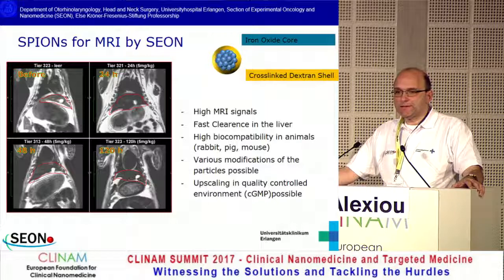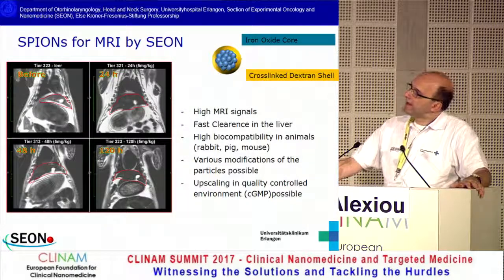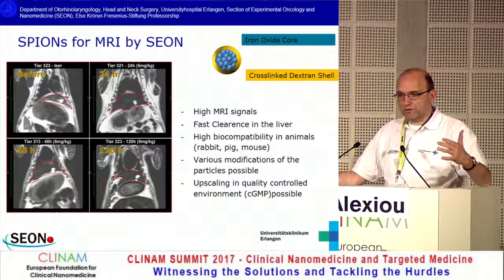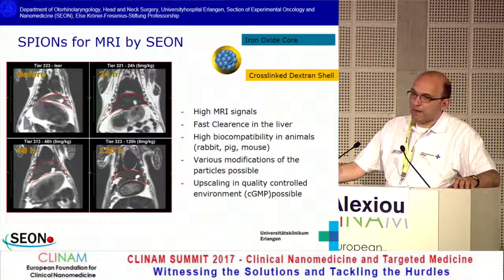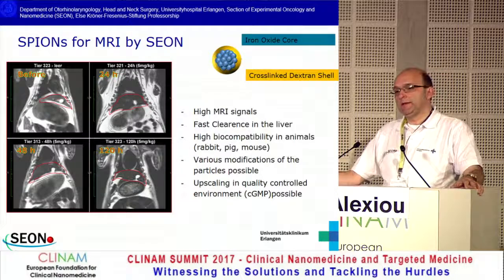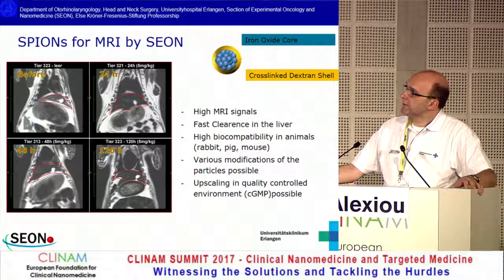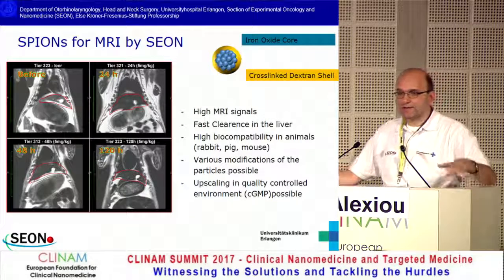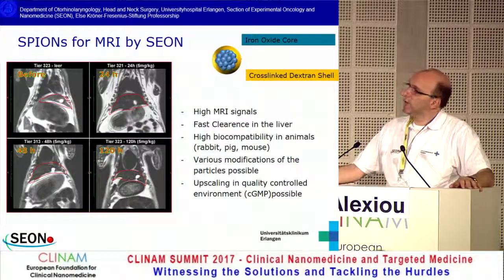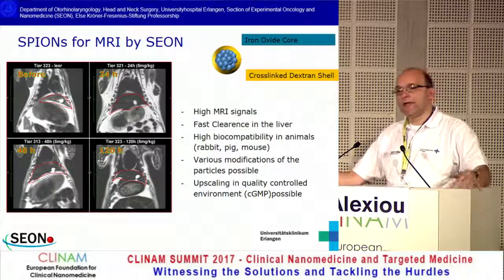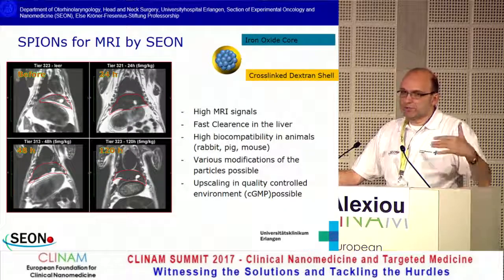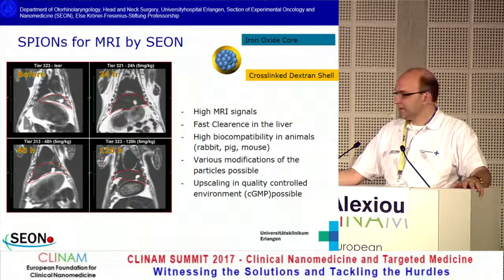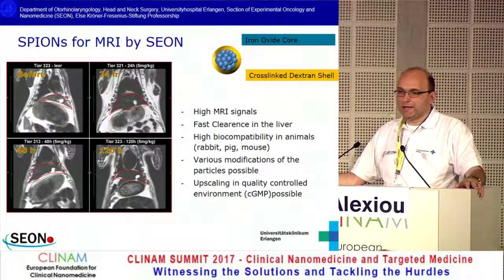What we are doing with our SPIONs — pictures done with Didier Littonnier at INSERM in Paris — we have shown whether the particles can be detected with MRI. This is a liver of a mouse before application of the SPIONs. After application at 24 hours, you have a signal loss in the liver, and this signal loss lasts from 48 to 120 hours in the respective tissue. So this is a potential model to use the particles as an MRI contrast agent.